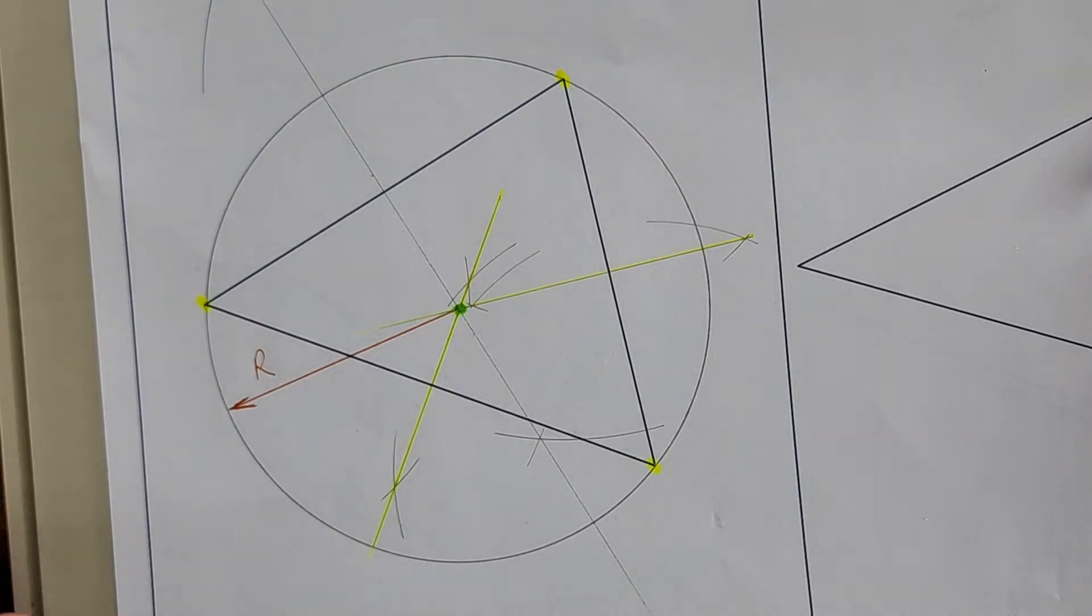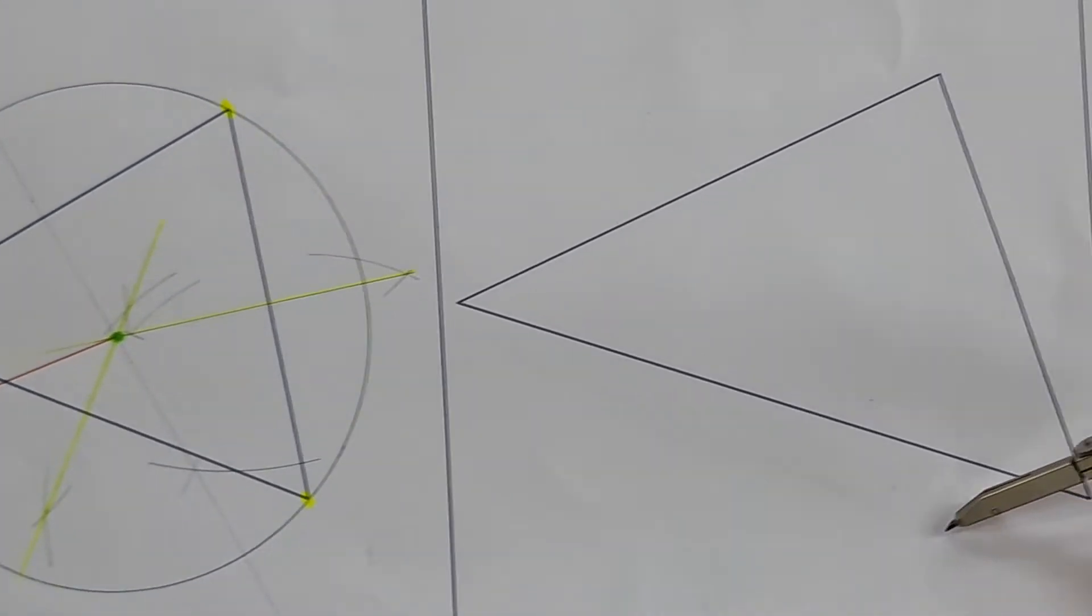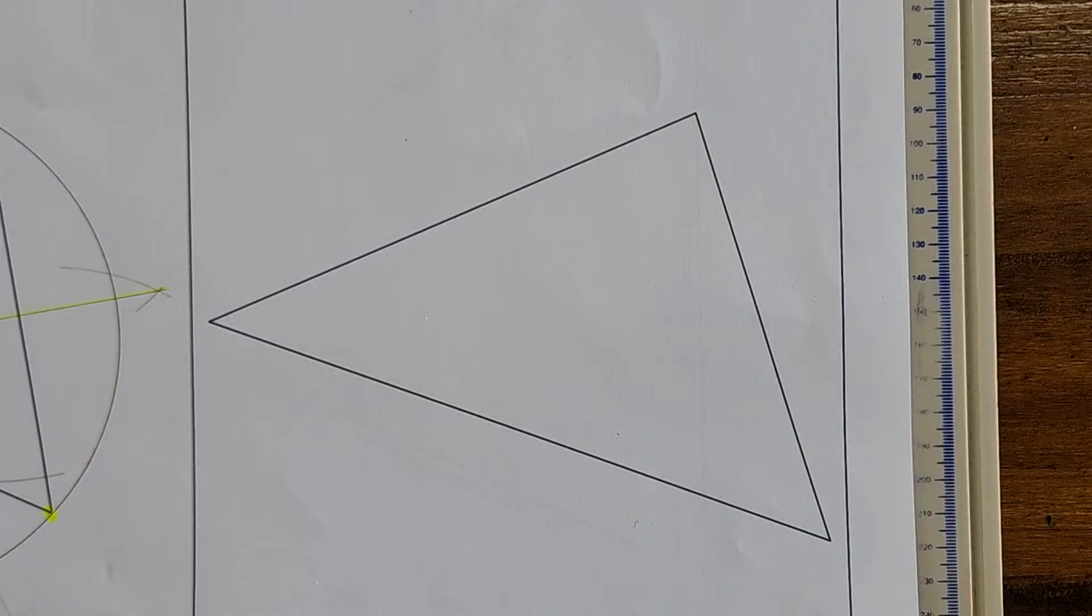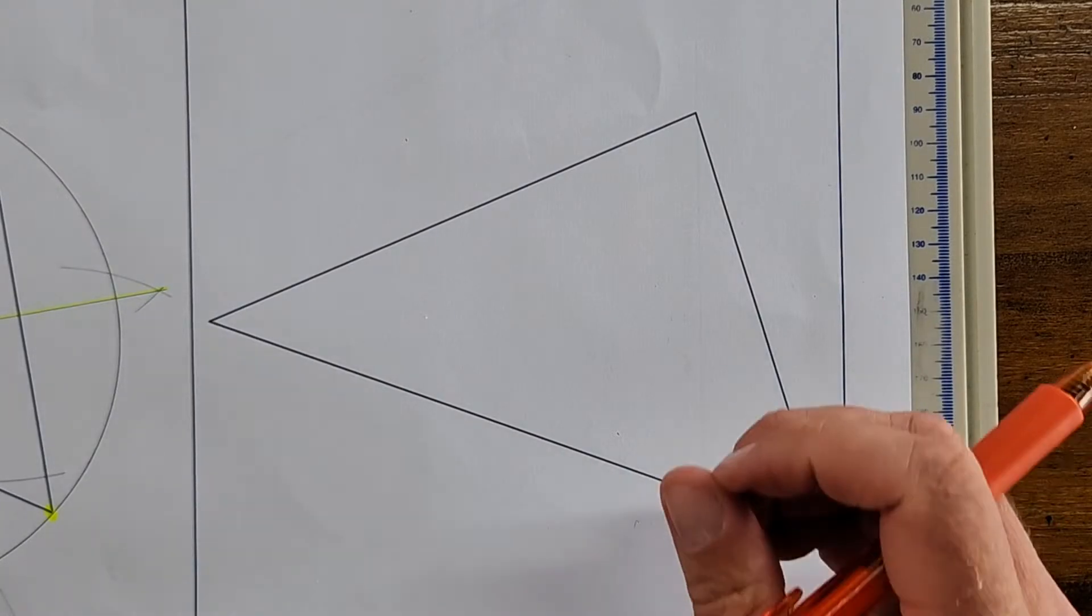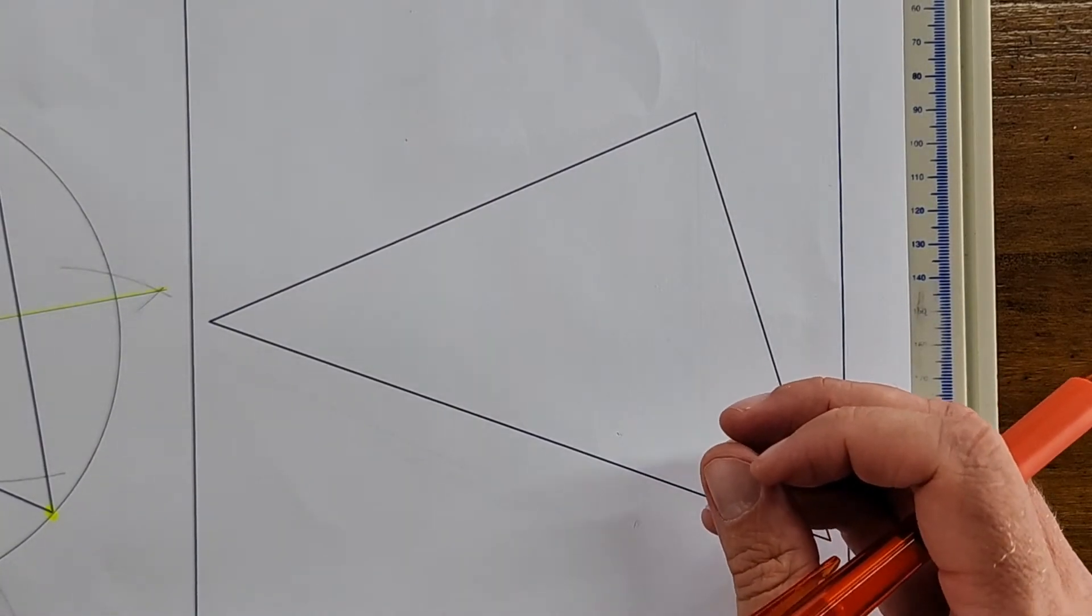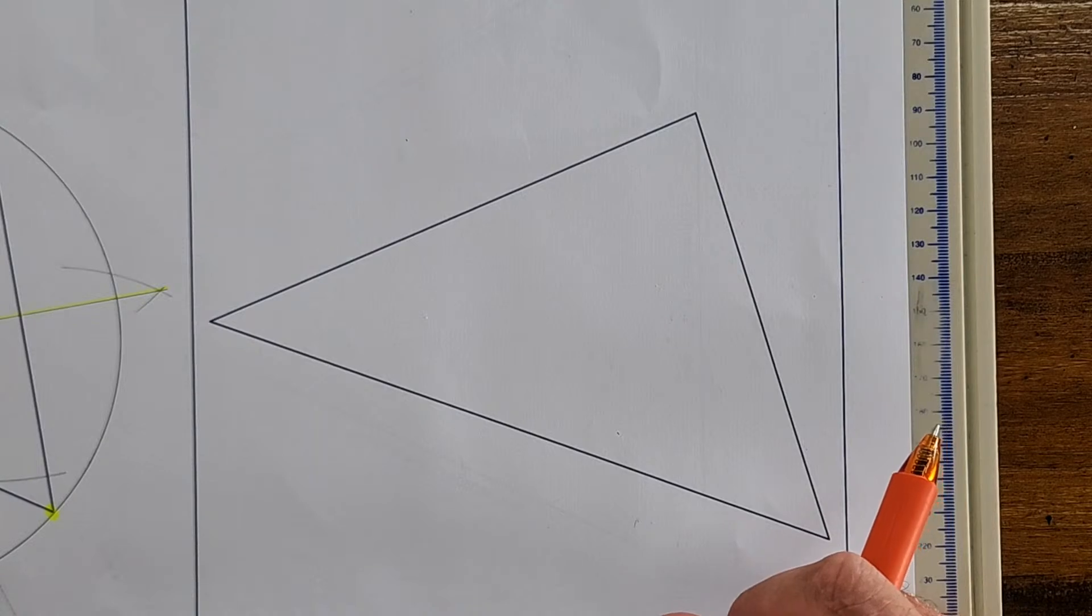We're going to step it up. This isn't all you're going to learn today. We're moving to the opposite side now. It says construct a circumscribed circle for the given triangle. It's actually what they said in the previous one as well.